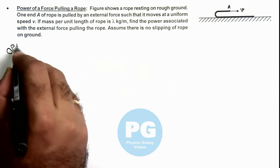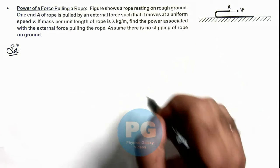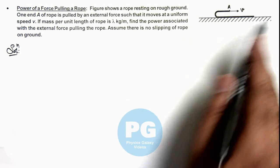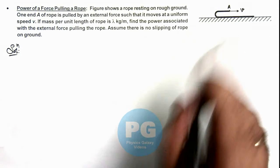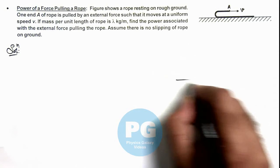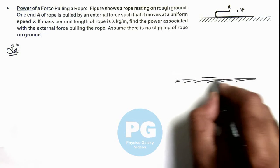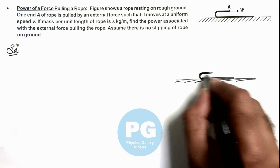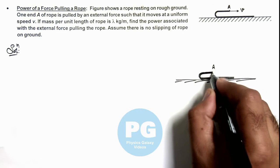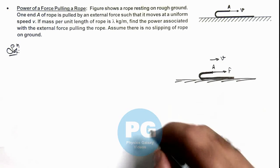In this situation, first we need to calculate the magnitude of force which is applied on A so that the rope end A will be moving uniformly at speed v. If we redraw the picture, we can see the resting rope which is being pulled in the opposite direction at end A, and the force F is applied onto it so that it moves at a uniform speed v.